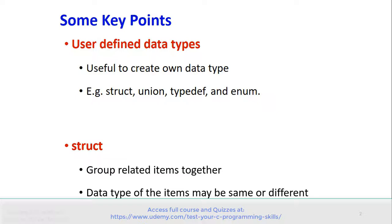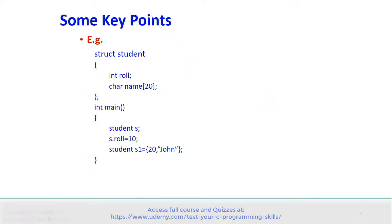Structure groups related items together. The data types of these items may be same or different. Here is an example of using Structure in a C program: struct student with two members, role and name. In the main function, a Structure variable s is created. s.role is 10. Another way of using Structure: student s1 = {20, "John"}.